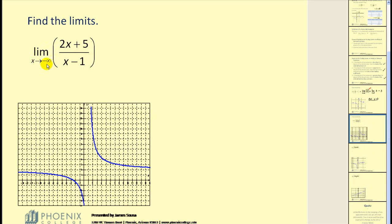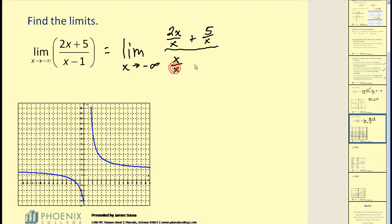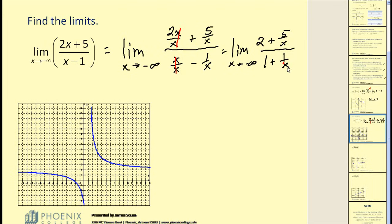Now let's find the limit as x approaches negative infinity of (2x + 5) divided by (x − 1). The guideline says to divide by the highest power of x in the denominator, which is x. Dividing every term by x and simplifying, we get 2 plus 5/x over 1 plus 1/x. Using our theorem, the terms 5/x and 1/x both approach zero, leaving 2 over 1. Therefore the limit equals positive 2.